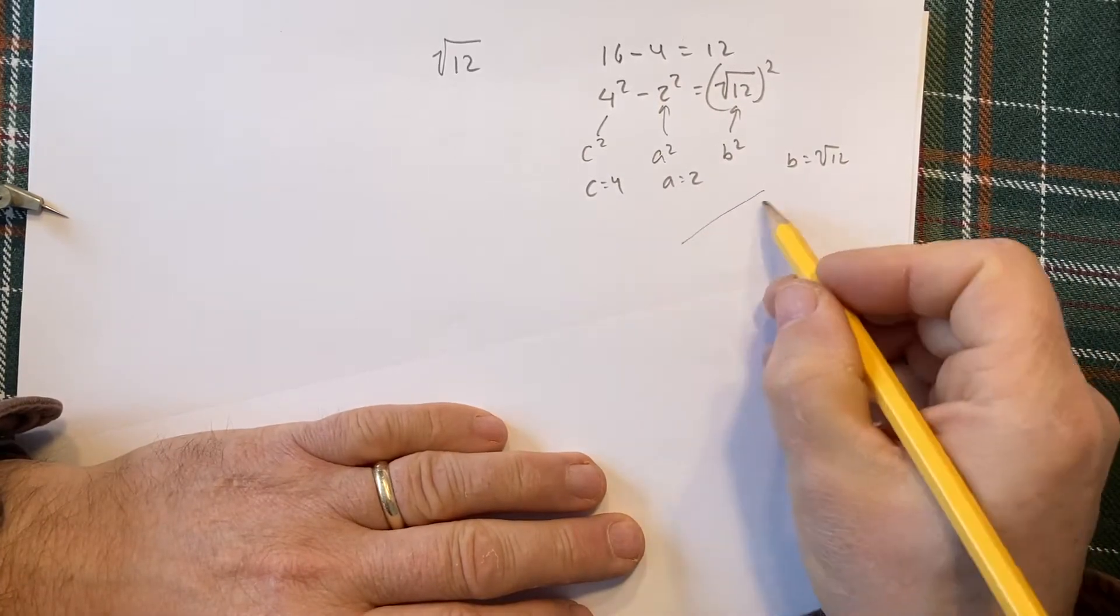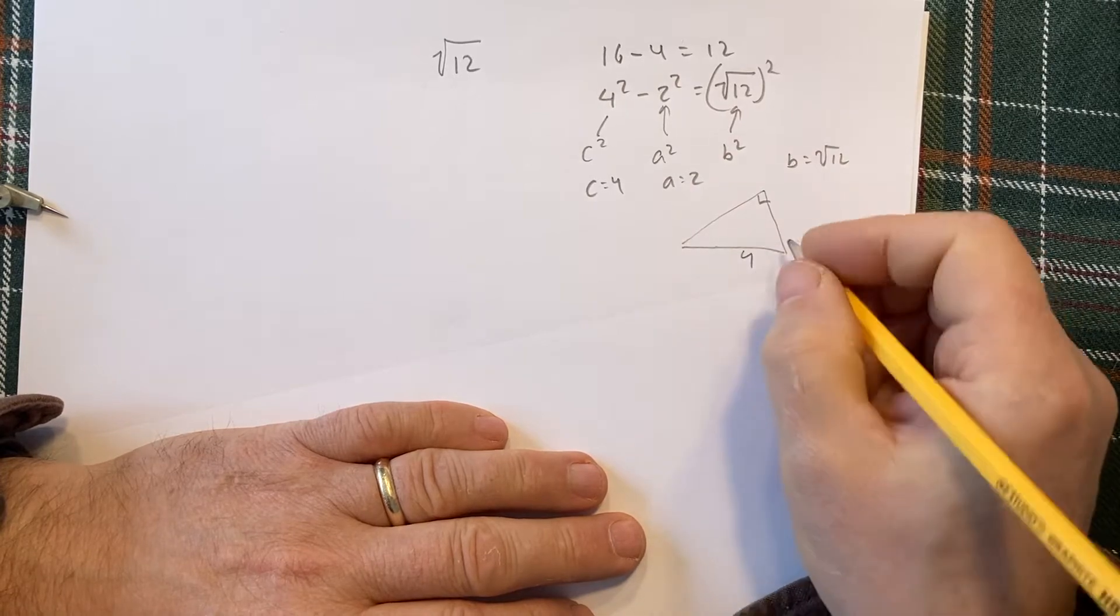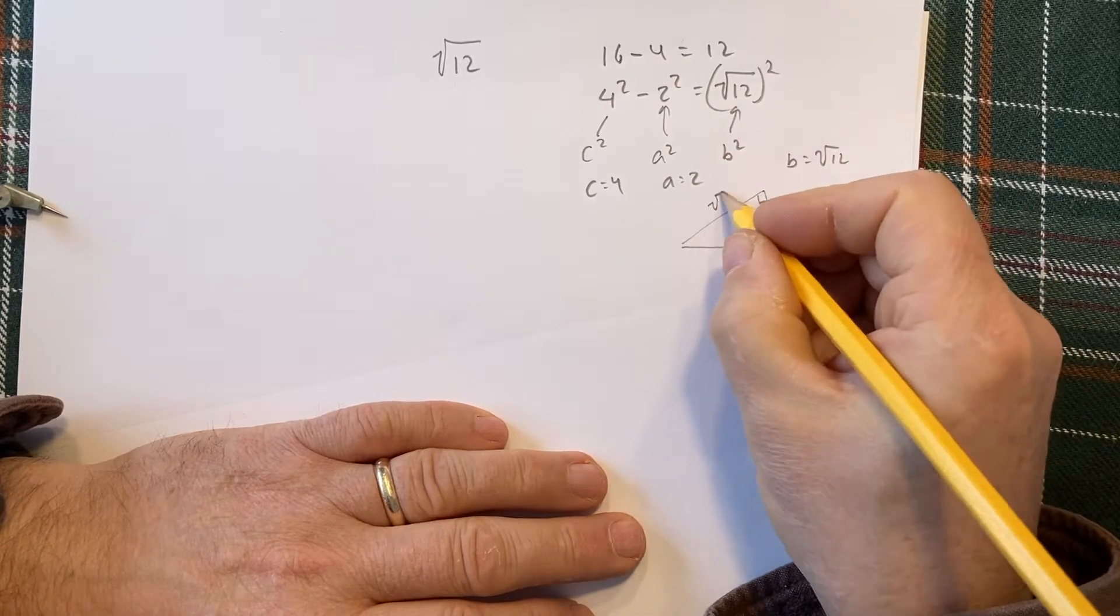I want to construct a triangle that looks like this. So this is your right angle, this is going to be your 4, this is going to be your 2, and this is going to be your root 12.